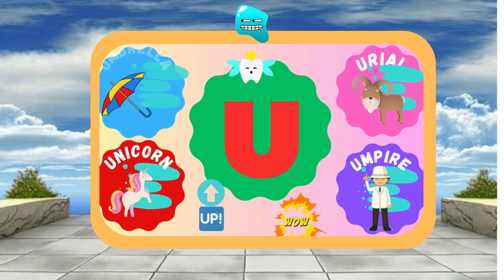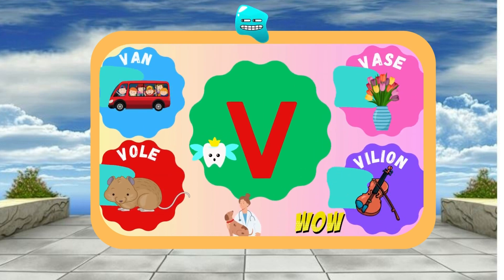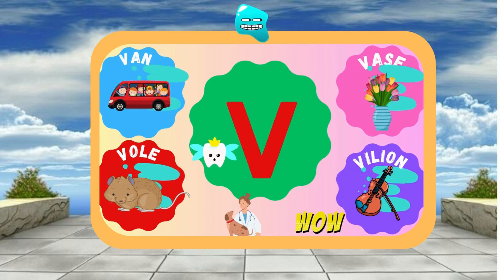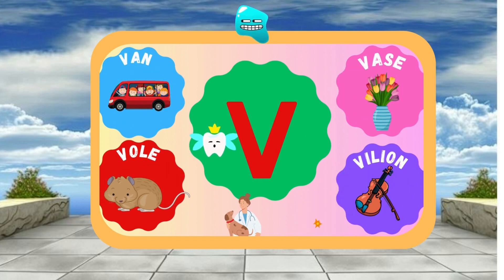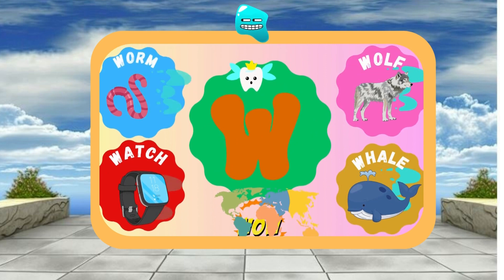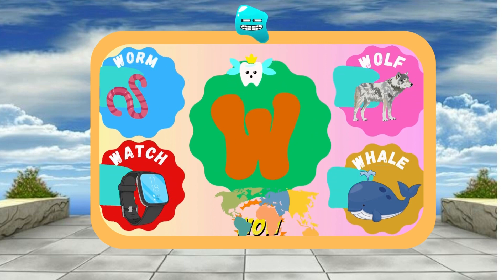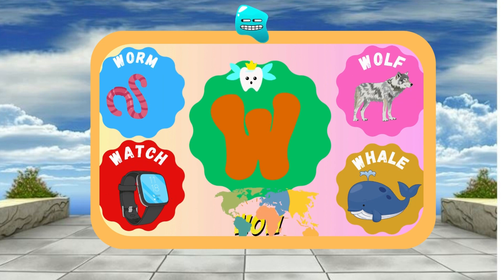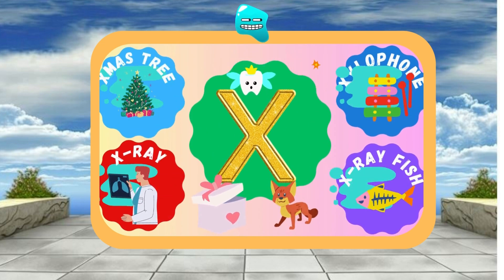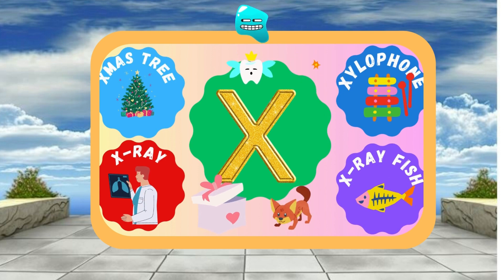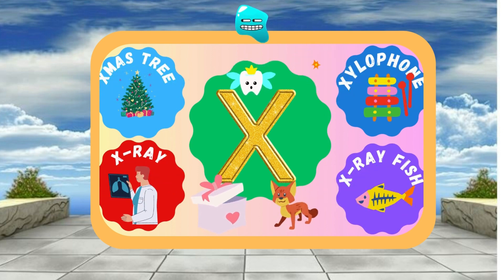V is for Violin — V, v, Violin. V is for Vet — V, v, Vet. W is for Whale — W, w, Whale. W is for World — W, w, World. X is for Fox — X, x, Fox. X is for Fox — X, x, Fox.